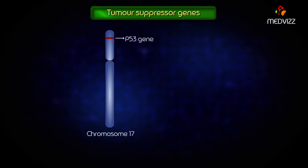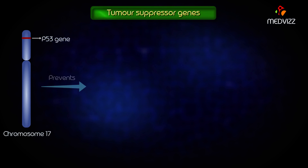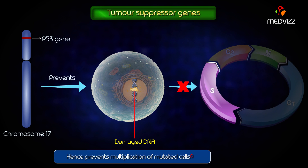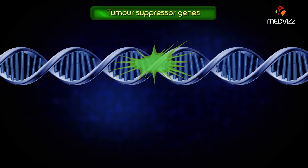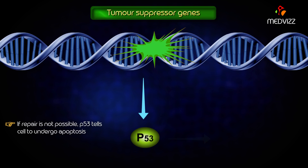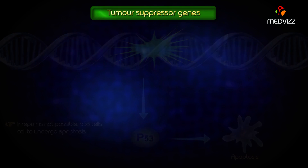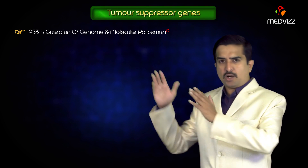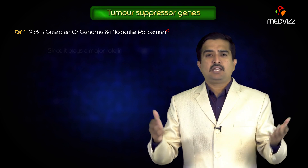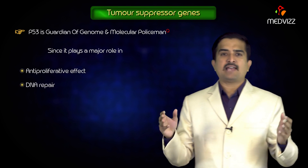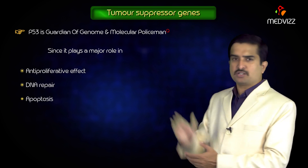The p53 gene is present on chromosome 17 and prevents a cell with damaged DNA from entering the S phase, thus preventing multiplication of mutated cells. If there is DNA damage, p53 tells the retinoblastoma gene to stop the cell cycle to allow for repair. If repair is not possible, p53 tells cells to undergo apoptosis. This is why p53 is called the guardian of the genome or molecular policeman, playing a major role in anti-proliferative effects, DNA repair, and apoptosis.